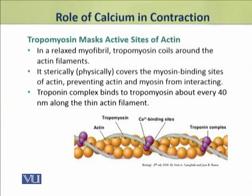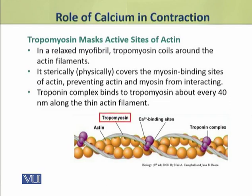In a relaxed myofibril, tropomyosin coils around the actin filaments. During this coiling, it physically covers the myosin binding sites on actin. Because of this coiling, actin and myosin are prevented from interacting with each other.